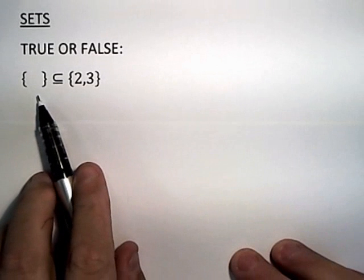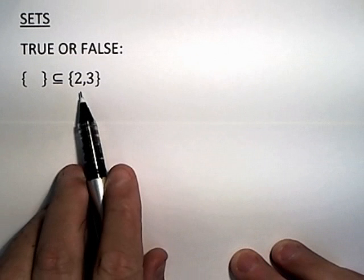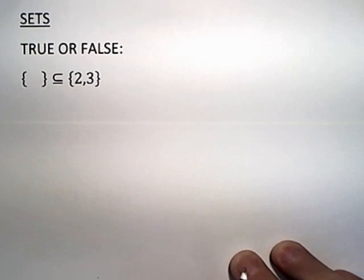First of all, true or false, the empty set is a subset of the set containing the elements 2 and 3.